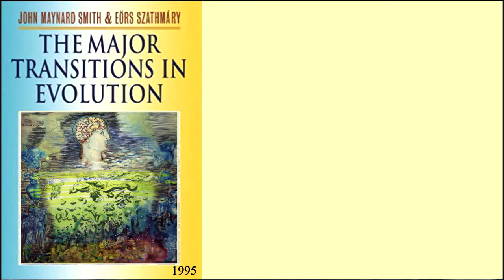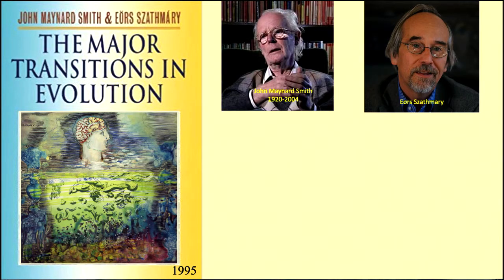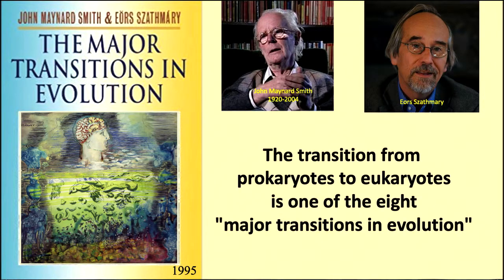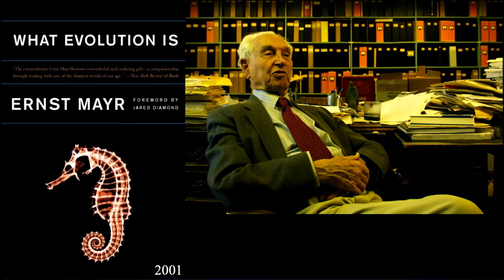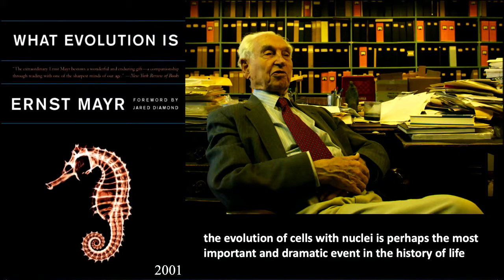There's a nice book, The Major Transitions in Evolution, published in 1995 — a very important and influential book. The authors said the transition from prokaryotes to eukaryotes is one of the eight major transitions in evolution. There's also another book, What Evolution Is by Ernst Mayr, and he said the evolution of cells with nuclei — eukaryotes — is perhaps the most important and dramatic event in the history of life.